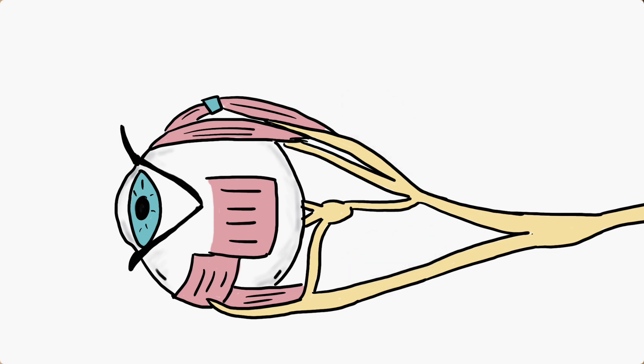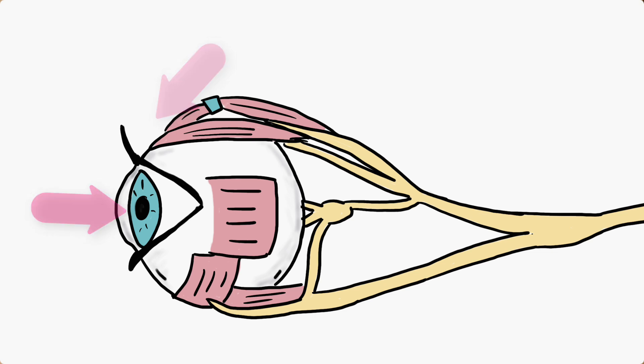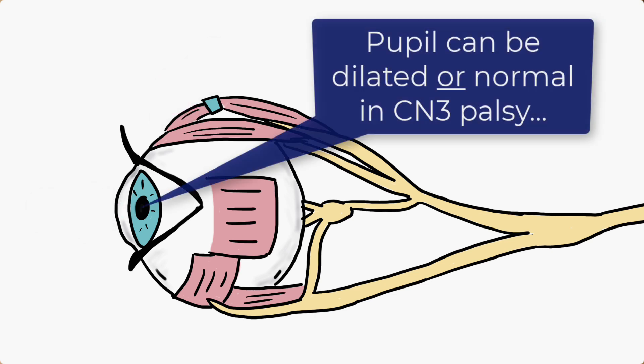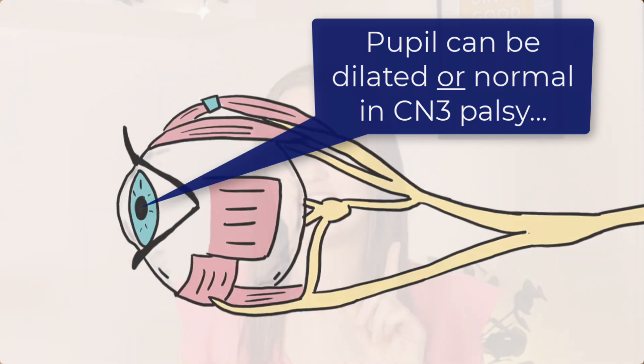In addition to innervating most of the eyeball movement muscles, cranial nerve 3 also innervates the upper eyelid and it carries parasympathetic fibers to the pupil which promote pupil constriction. This pupil abnormality can vary, and we'll circle back to the pupil shortly. But first, I wanted to pause and hand over to you for a puzzle.